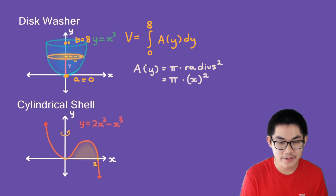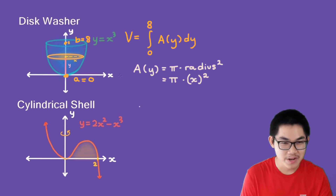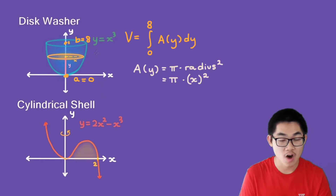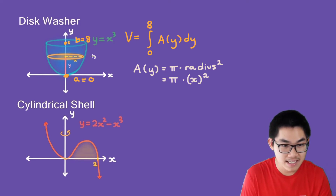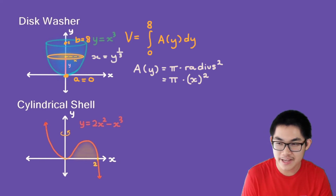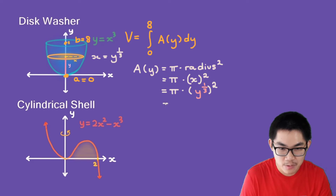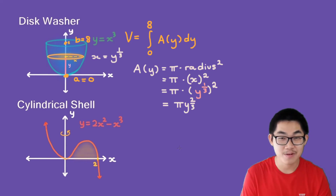Since we're integrating with respect to y, we need to rewrite x in terms of y. Taking the cube root of both sides of y = x³ gives x = y^(1/3). Substituting, the area becomes A(y) = π·(y^(1/3))² = π·y^(2/3). Now that we have the area of the cross section, we substitute it back into the integral.